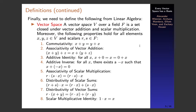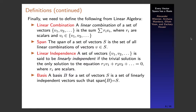Finally, we need to discuss some definitions from linear algebra, since we're talking about why every vector space has a basis. A vector space V over field F is a set closed under vector addition and scalar multiplication, satisfying properties including commutativity and associativity of vector addition, an additive identity, an additive inverse for every element, associativity of scalar multiplication, distributivity over scalar and vector sums, and the existence of a scalar multiplicative identity. A linear combination of a set of vectors is a sum of scalar multiples of those vectors.